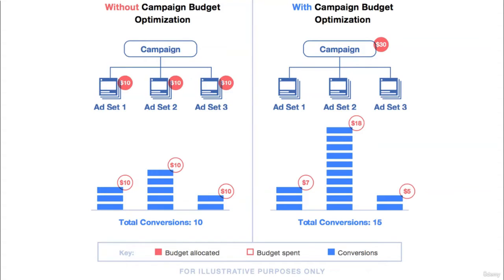Now that we know the structure of Facebook ads, it will be easier to understand the concept of without and with campaign budget optimization. On the left screen, we can see a campaign structure set on ad set budget optimization — there are three ad sets in the campaign with a budget of $10 for each ad set.